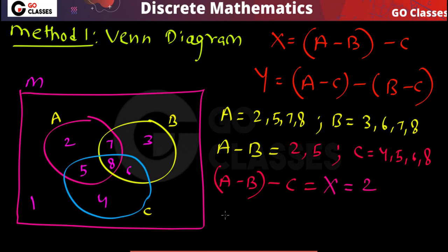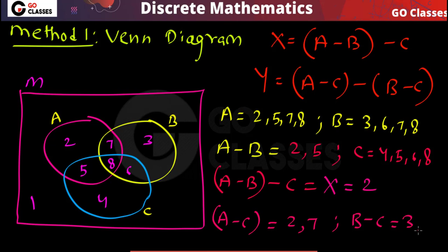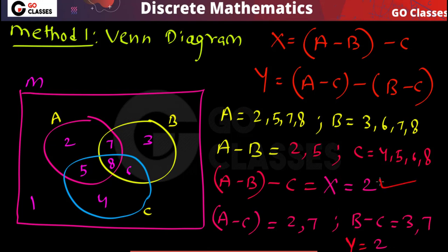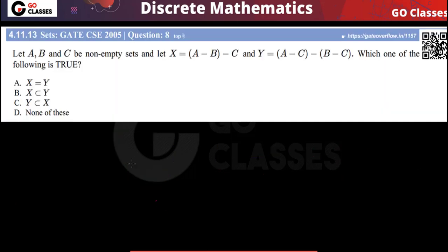For set Y, A minus C gives {2, 7}, and B minus C gives {3, 7}. Now Y is (A minus C) minus (B minus C) — from {2, 7} we remove {3, 7} — which gives area {2}. So the area of X is 2 and the area of Y is also 2. We can see that X and Y are the same, so X equals Y.